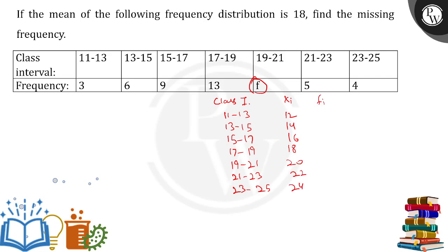In the frequency we have one missing value that we are interested in. That is 3, 6, 9, 13, f which is the missing one over here, then 5 and 4.